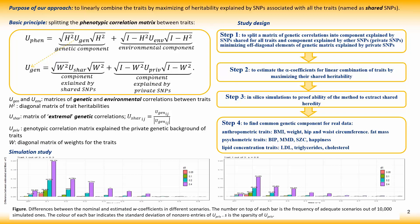The typical relation matrix between traits can be decomposed into genetic and environmental parts. The genetic component in turn can be represented as a component explained by SNPs shared for all the original traits, and by a component explained by other SNPs, called here as private.